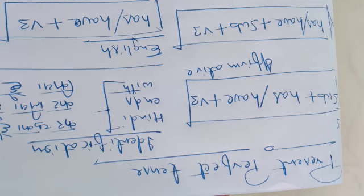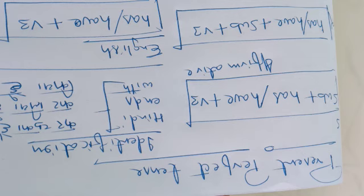If any sentence ends with 'kar chuka hai,' 'kar liya hai,' or 'kia hai,' that will be counted as present perfect tense. For example, 'I have thought' — in Hindi you could say 'maine socha hai,' 'maine socha chuka hoon,' or 'maine socha liya hai' — all three ways it is present perfect tense.